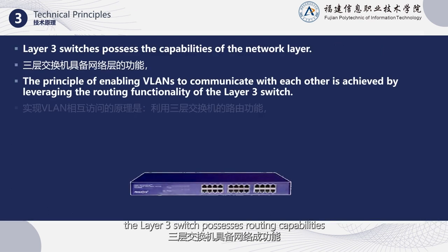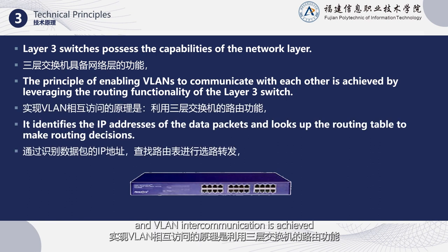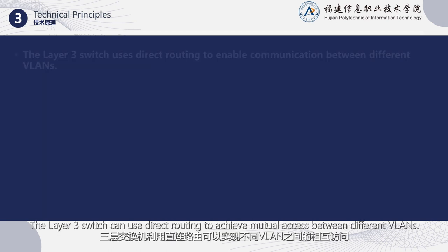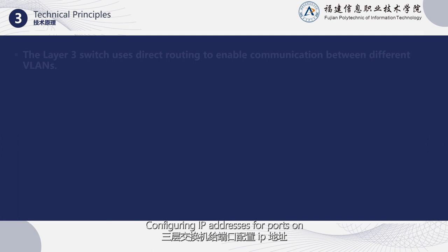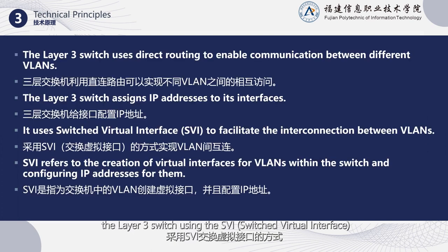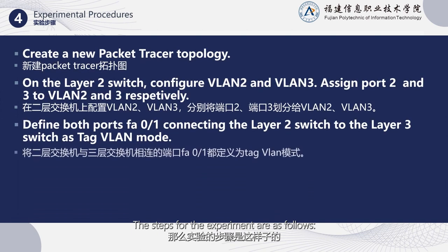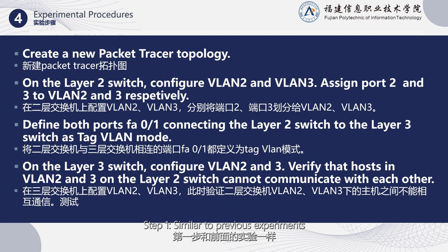The Layer 3 switch possesses routing capabilities, and VLAN intercommunication is achieved by identifying the IP addresses of data packets and looking up the routing table for path selection and forwarding. The Layer 3 switch can use direct routing to achieve mutual access between different VLANs, by configuring IP addresses for ports using the SVI (Switched Virtual Interface) method to establish connections between VLANs. SVI refers to creating virtual interfaces and configuring IP addresses for VLANs within the switch.